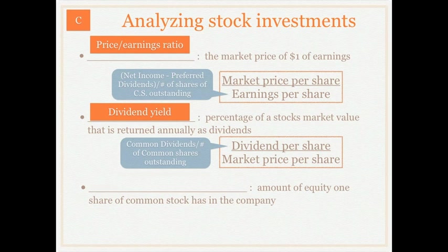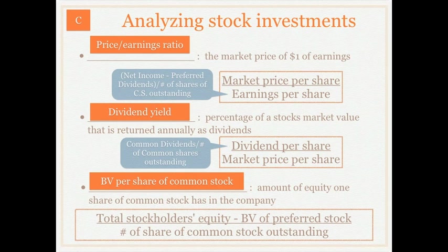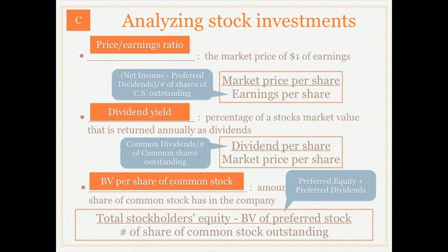The third ratio is the book value per share of common stock, which is the amount of equity that one share of common stock has in the company. To calculate this we take total stockholders' equity less the book value of preferred stock, divided by the number of shares of common stock outstanding. The book value of preferred stock is calculated by taking preferred equity and adding preferred dividends.